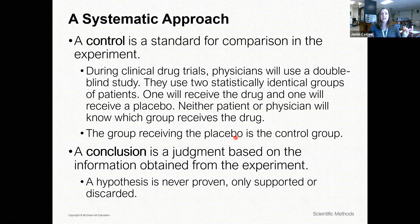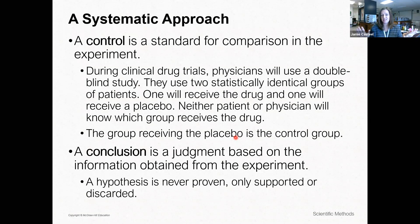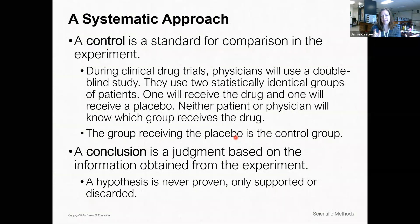There are two different things: control group and control variables. Control variables are the things that need to stay the same in the experiment. The control group is where I'm not putting subjects through the same rigors of the experiment — I'm leaving it alone to see a baseline. For the balloon analogy: what happens if I leave the balloon alone? We want that control so we can measure — at the baseline this is what it looks like with no intervention, then as I change it, what happened?